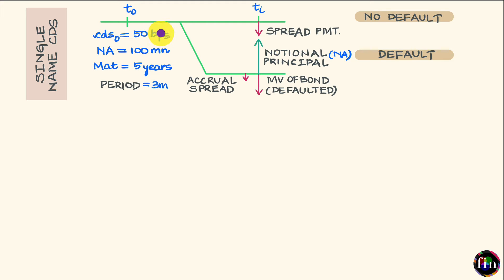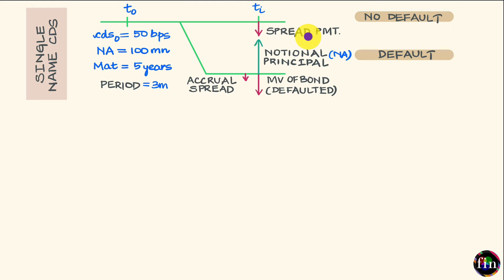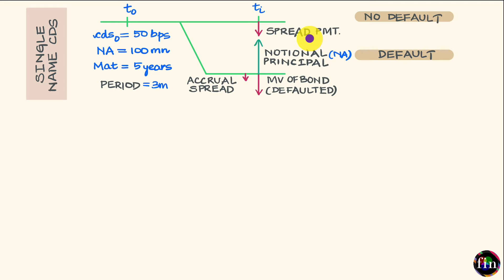For ABC company over a 5-year period, let's say the CDS spread is 50 basis points. In that case, your spread payment for any quarterly period would be: $100 million × 50 basis points × 0.25 years = $125,000.